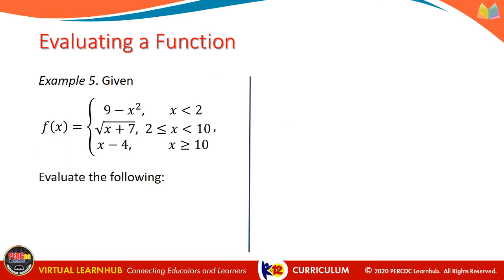Example number 5. Given the piecewise function: f of x equals 9 minus x squared if x is less than 2; square root of x plus 7 if x is greater than or equal to 2 but less than 10; and x minus 4 if x is greater than or equal to 10. Evaluate: letter a, f of 1; letter b, f of 3; and letter c, f of 20.